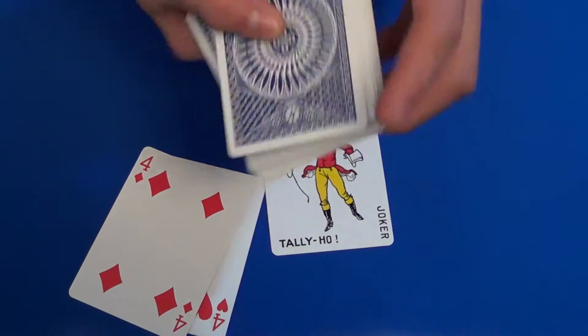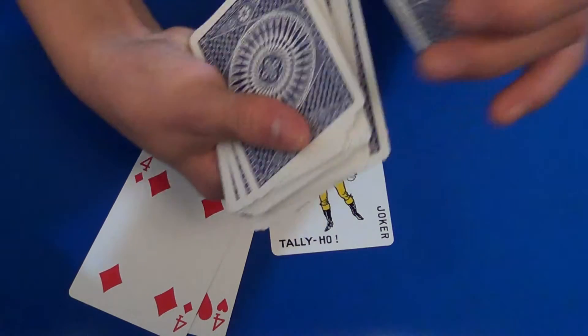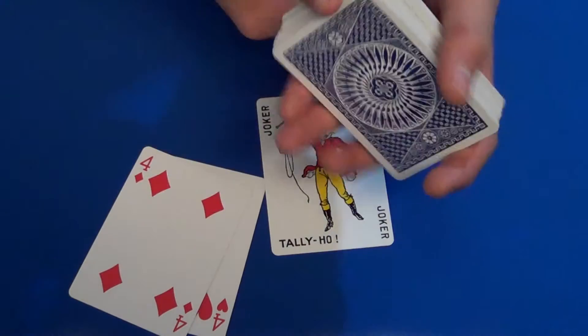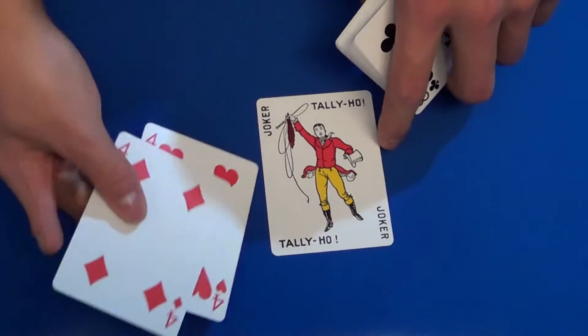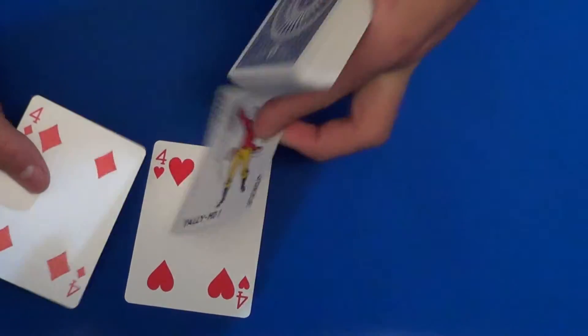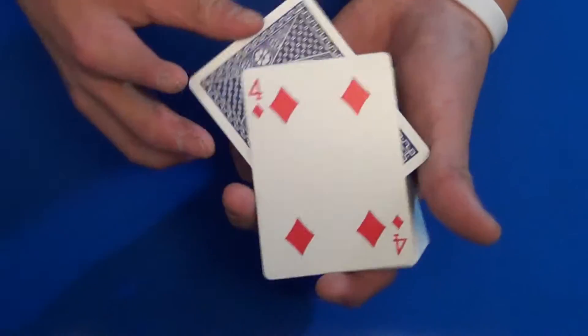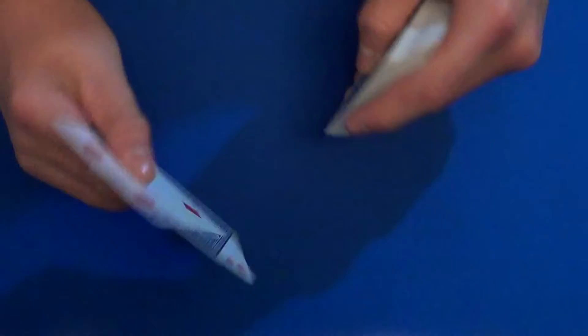Now I want to switch it out for, let's just say, the ace of hearts. I want to do this without you knowing, so I would have the cards sandwiched like this. I'd have my joker in here sandwiched just like so.